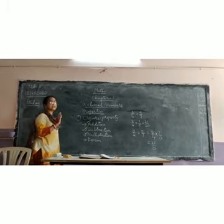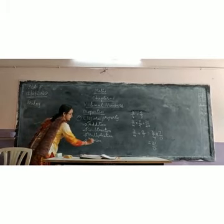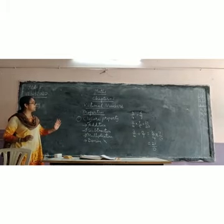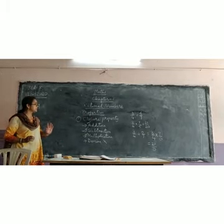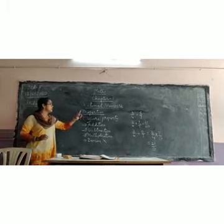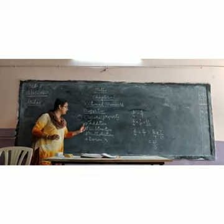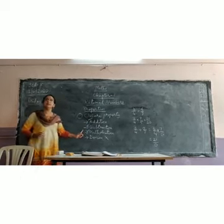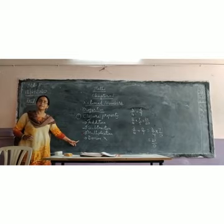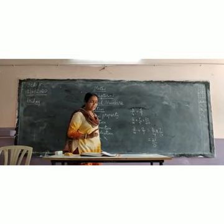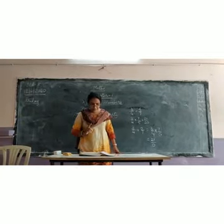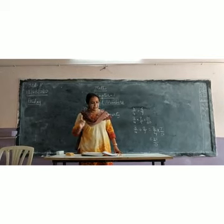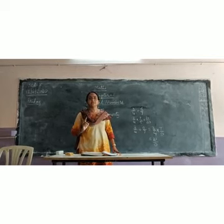So to summarize: for rational numbers, the closure property holds for addition, subtraction, and multiplication, but it does not hold for division. There will be an opportunity for you to practice this in the exercise that I will give you at the end of this session.